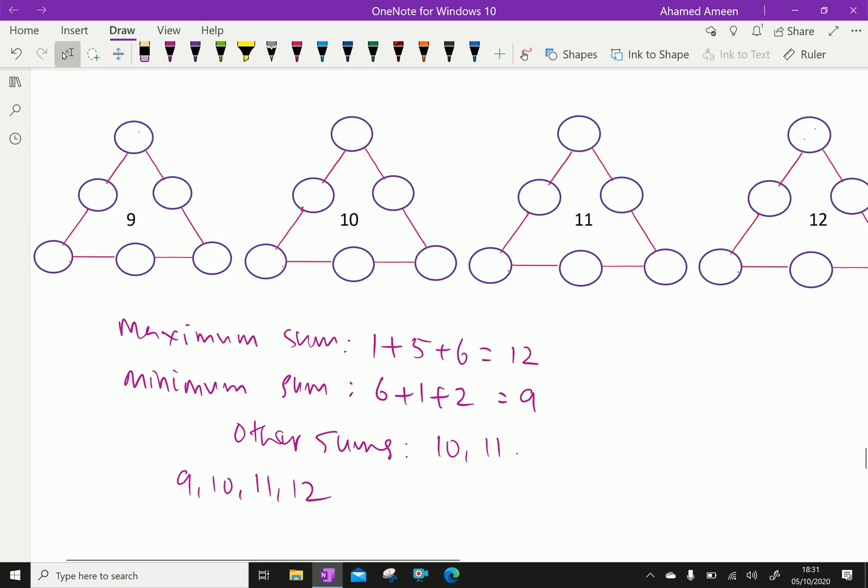First, for getting 9, already we explained, that is 1, 2, 3. So, 1 plus 2 is 3, 9 minus 3 is 6.